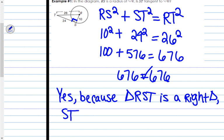ST is tangent segment to circle R. Because I was able to prove it's a right triangle, that means ST is perpendicular to RS, which means it is a tangent.